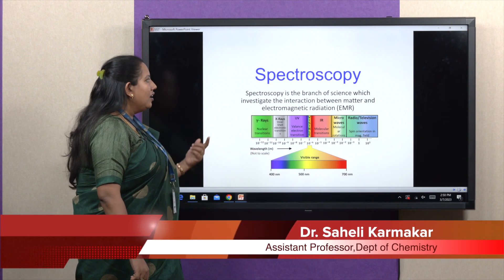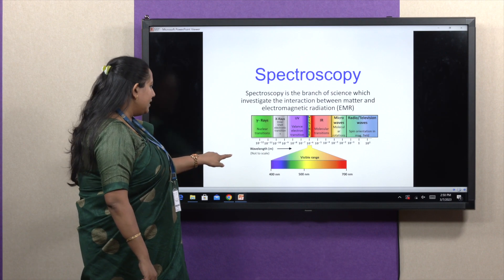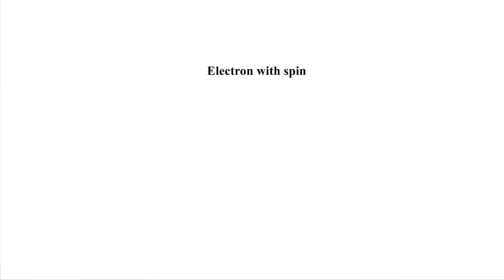Before we start the photoluminescence spectroscopy, we should know some terms. We all know that electrons have two different spins, clockwise and anticlockwise. When two different spins come together and pair up, they make a singlet state.